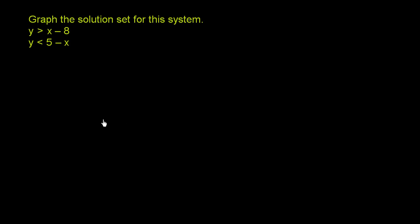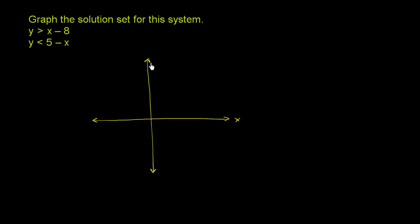Let me draw a coordinate axis here — the x-axis and the y-axis. Now let me draw the boundary line for the first inequality. The boundary line is going to look like y is equal to x minus 8, but it's not going to include it because it's only greater than x minus 8. But let's just graph x minus 8.